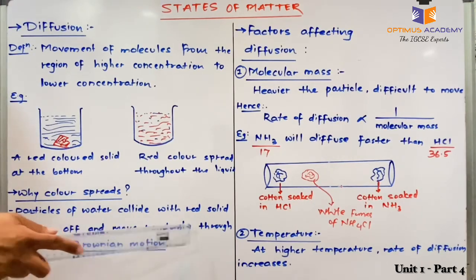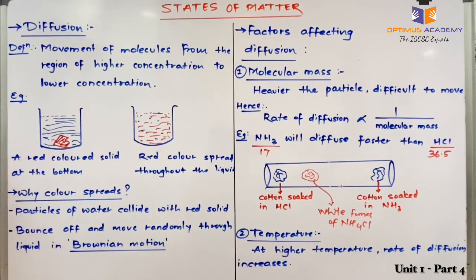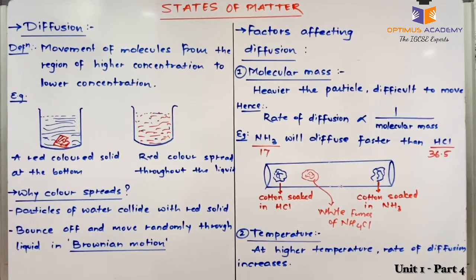This random and rapid movement of particles is known as Brownian motion. Brownian motion is defined as the motion of particles which is random and rapid.